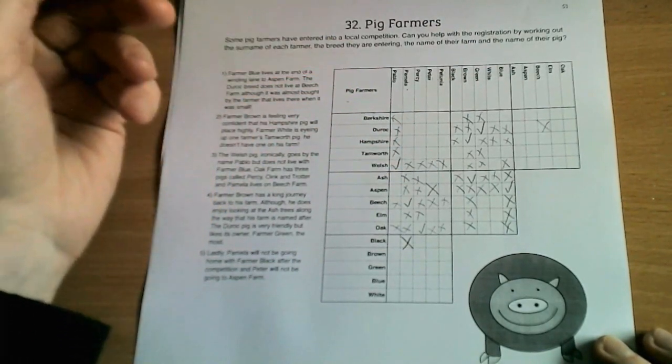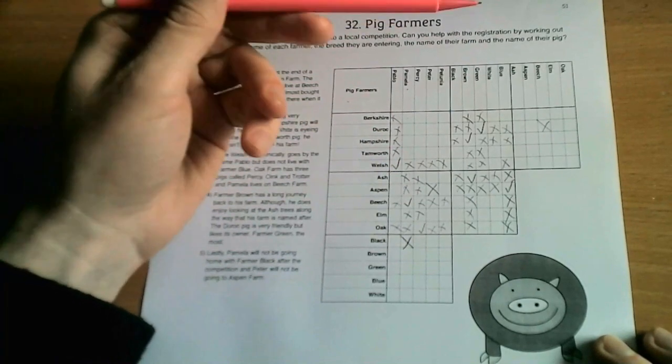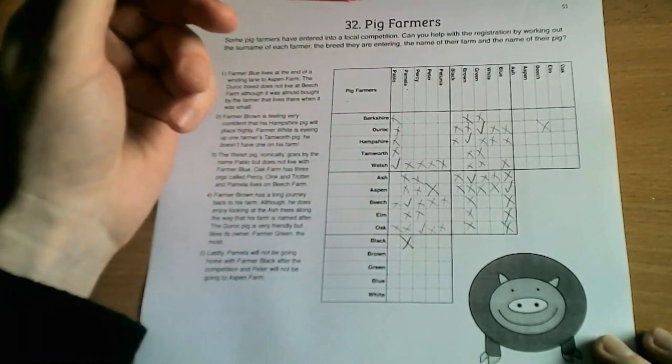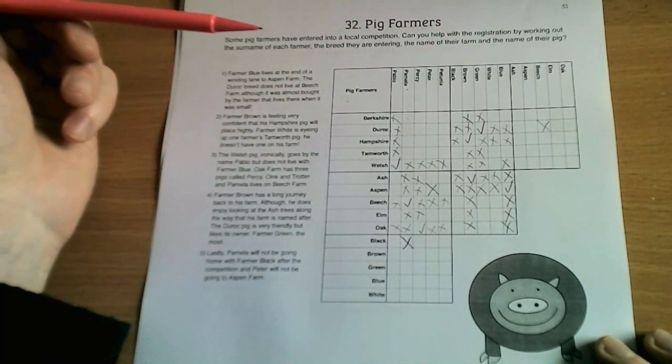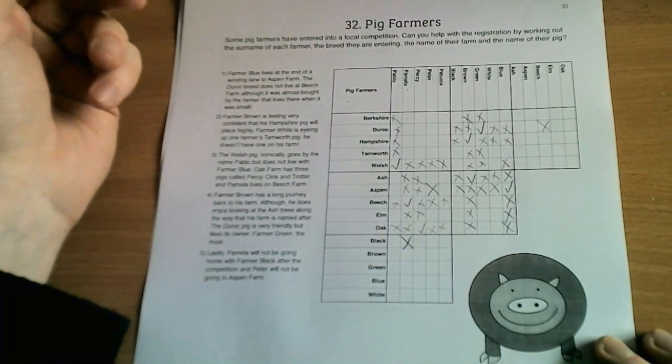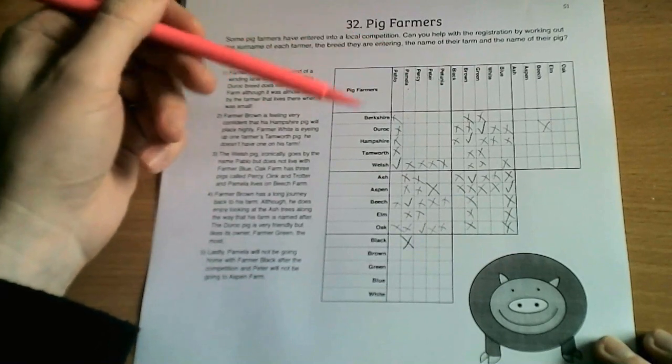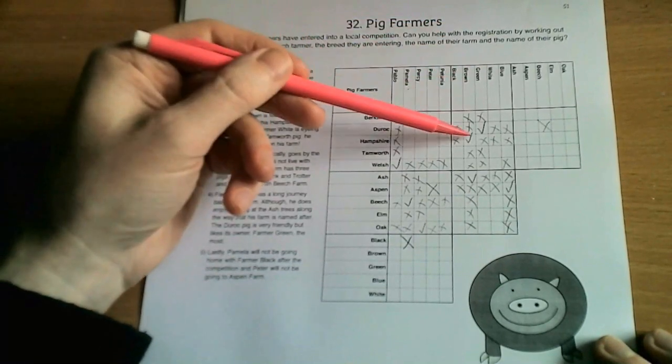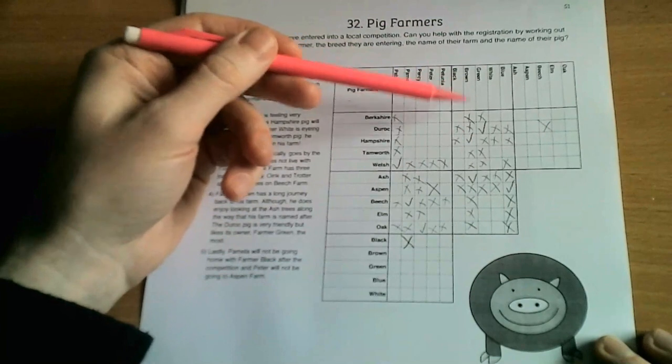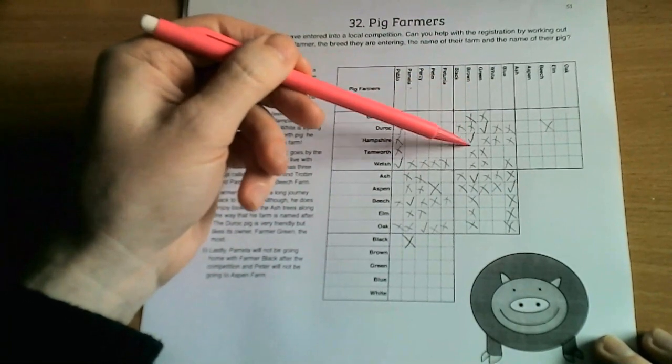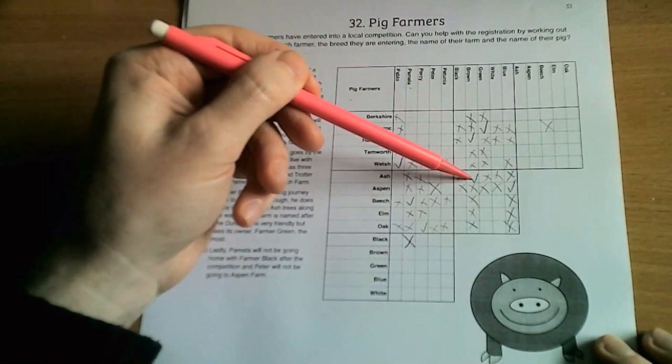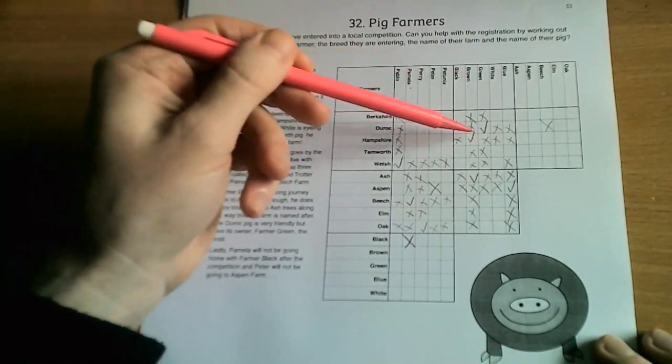So let's have a look. Farmer Brown, here you can see he's got two ticks. Brown is connected to Hampshire, so the Hampshire pig lives with Farmer Brown, and he's also linked to Ash Farm. So since Brown is Hampshire and Brown is Ash, Hampshire is Ash, and therefore the Hampshire pig lives at Ash Farm.